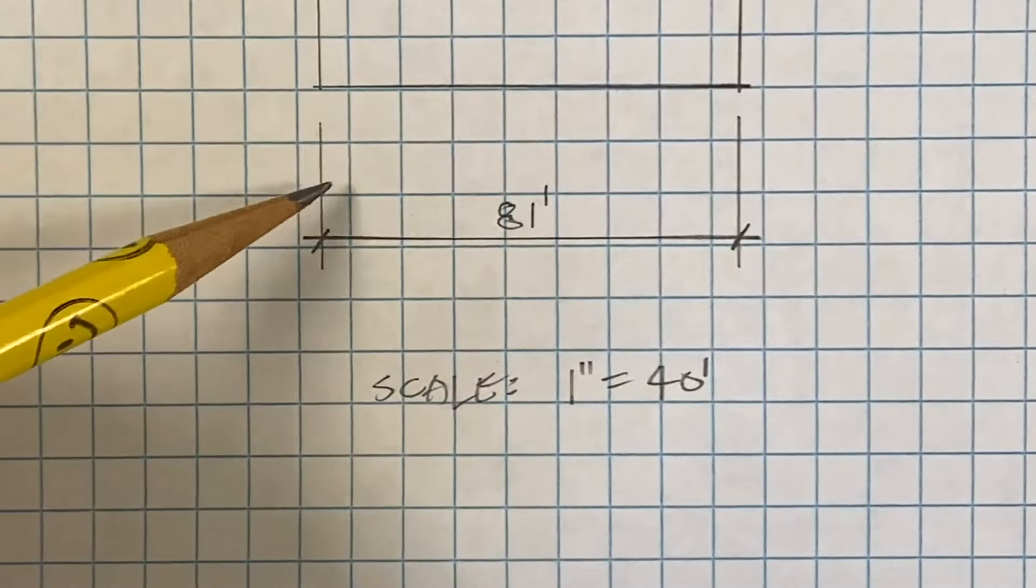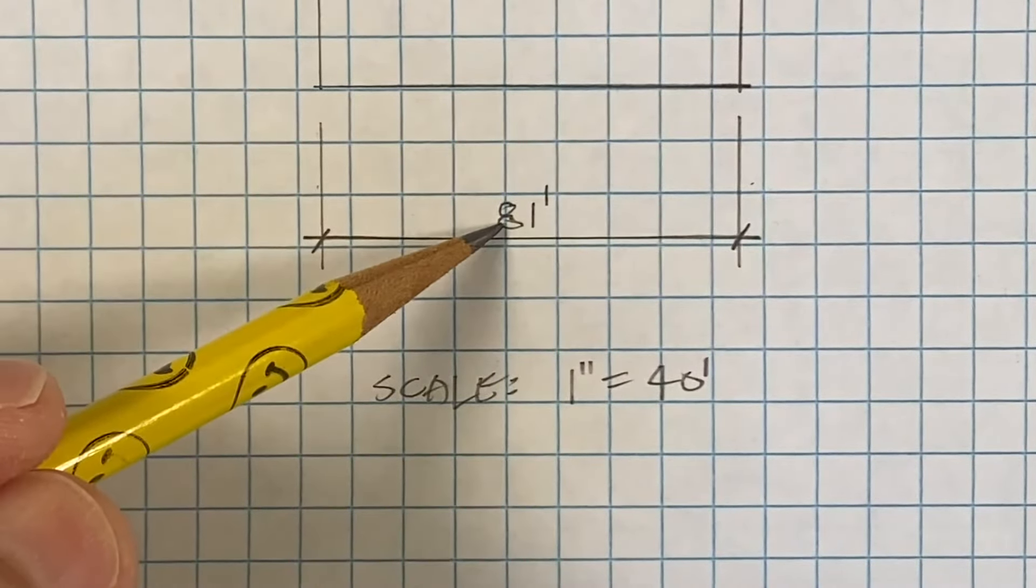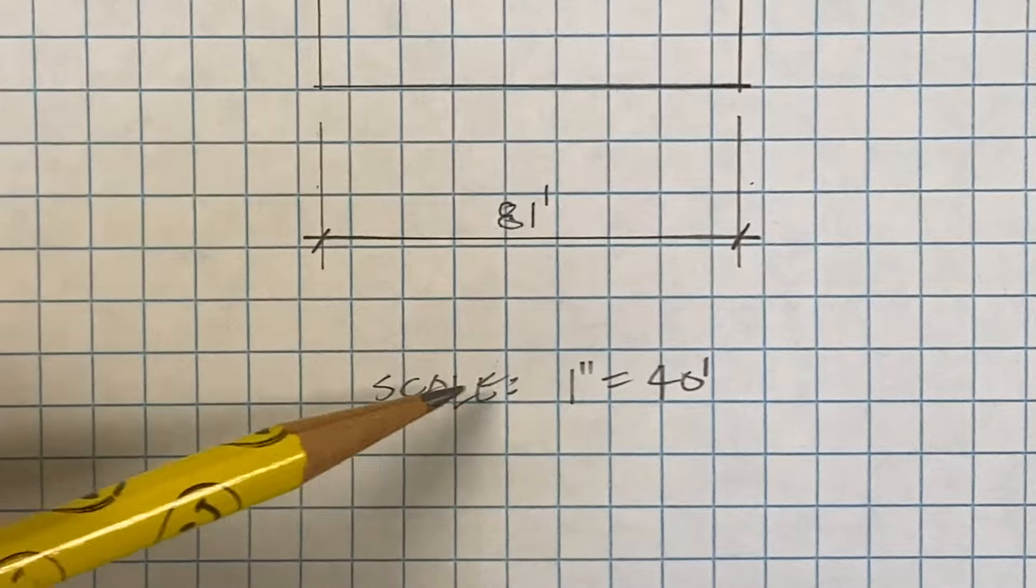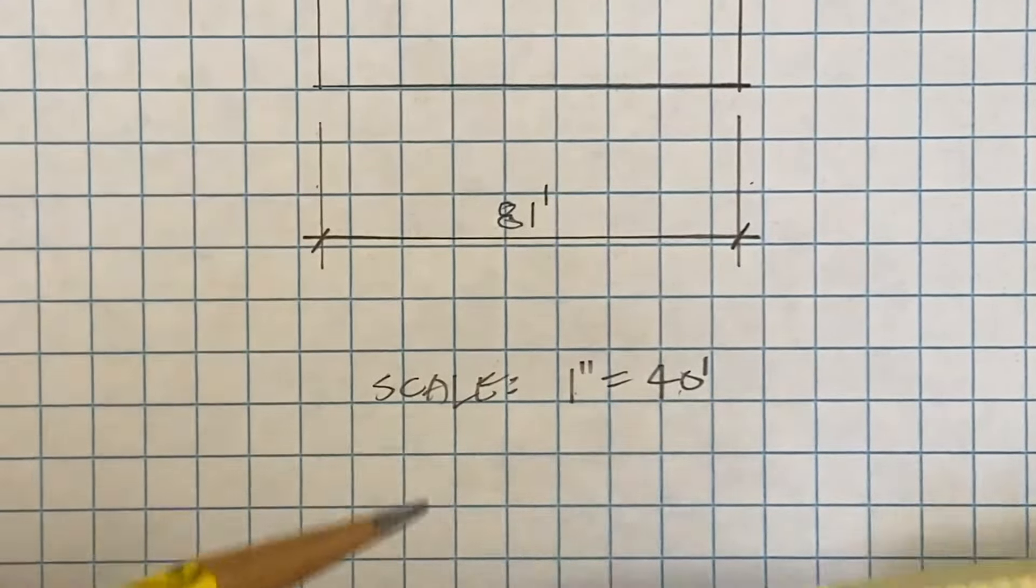In this example, we have a dimension of 81 feet, with a scale of 1 inch equals 40 feet.